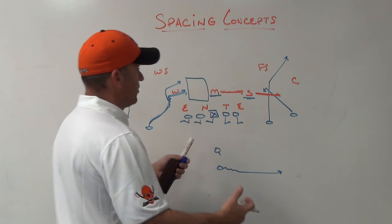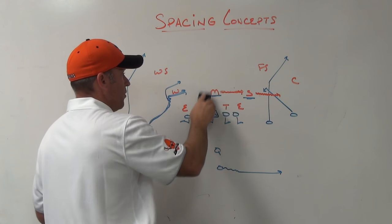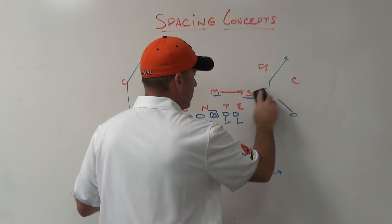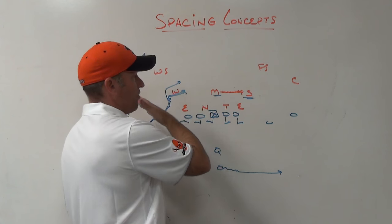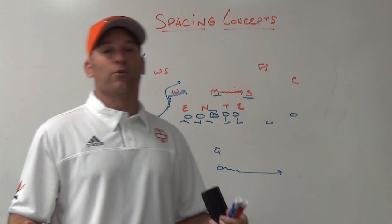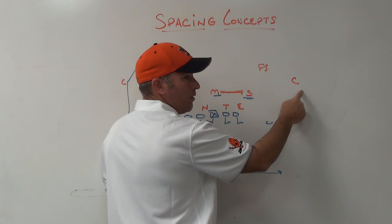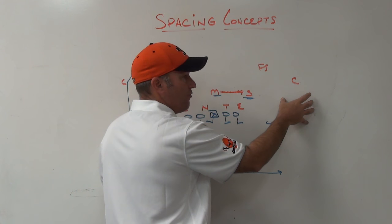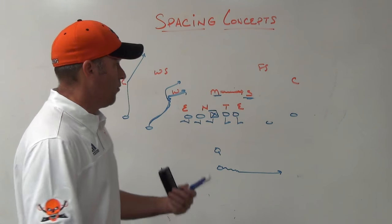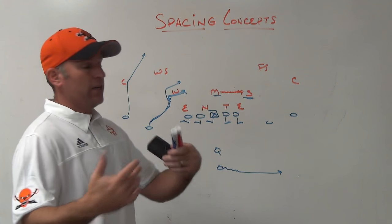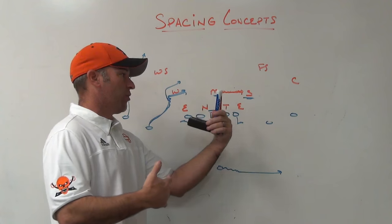When you're running this type of concept, you have to have answers for a Mike that's going to push all the way over to that new number three in the snag concept. In this concept of defense when they are playing a palms or a two-read scheme, they are really only playing with three underneath defenders, depending on the routes of the number two receiver. If number two never goes to the flat, that corner is almost never going to trigger down. You don't have to worry about another underneath defender if you run the right routes versus that coverage.